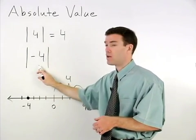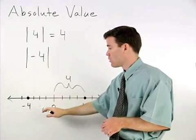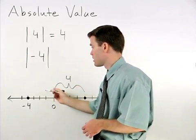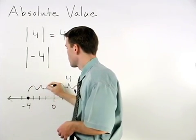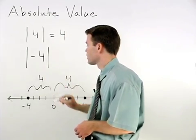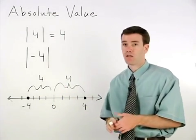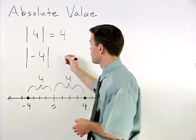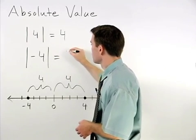For the absolute value of negative four, we know that negative four is also four units from zero on the number line. So the absolute value of negative four is also four.